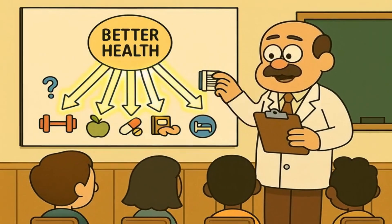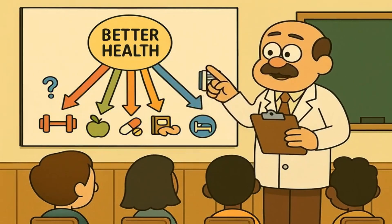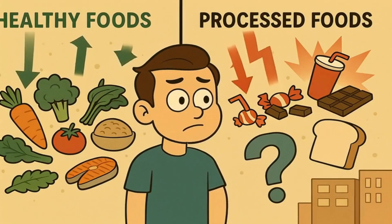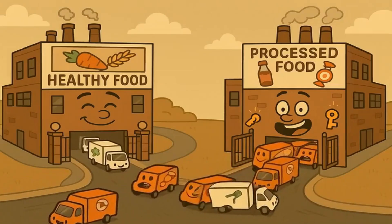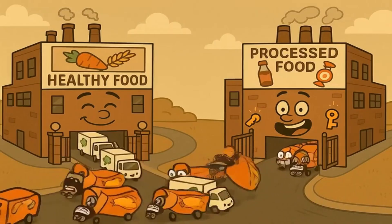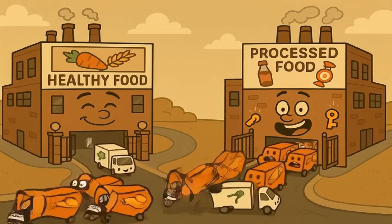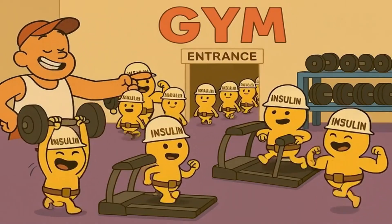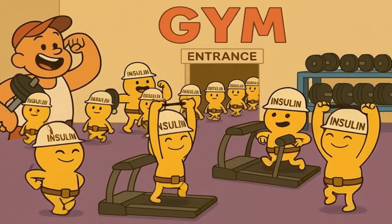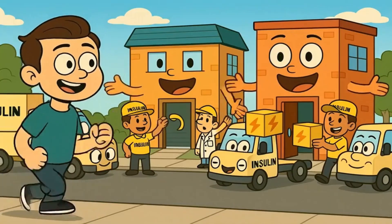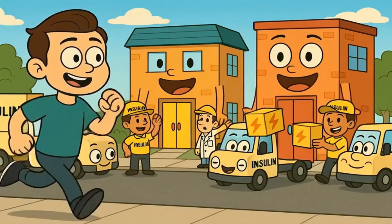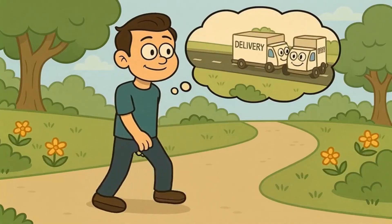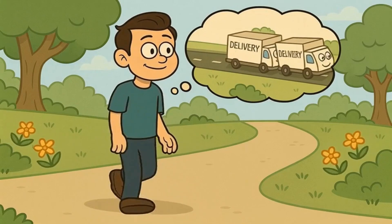The way to get your A1C lower involves several strategies. First, you need to reduce the number of delivery trucks that show up all at once — this means eating foods that don't cause big spikes in blood sugar. Foods like vegetables, lean proteins, and whole grains send out delivery trucks slowly and steadily, while foods like candy, soda, and white bread send out huge convoys of trucks all at once. Exercising is like hiring more insulin workers and making the existing ones stronger and faster. When you move your body regularly, your insulin workers get better at their jobs, and your buildings become more willing to open their doors for deliveries. Even a simple walk after meals can help your delivery system work more smoothly.